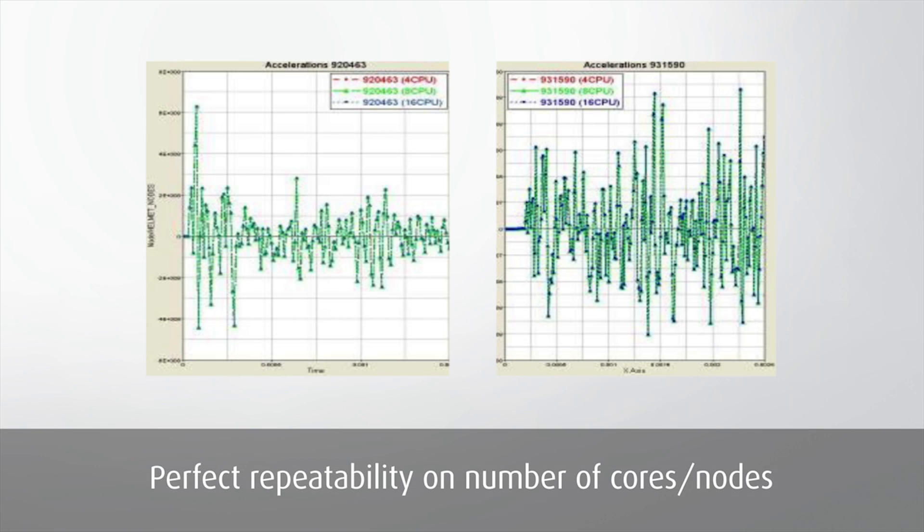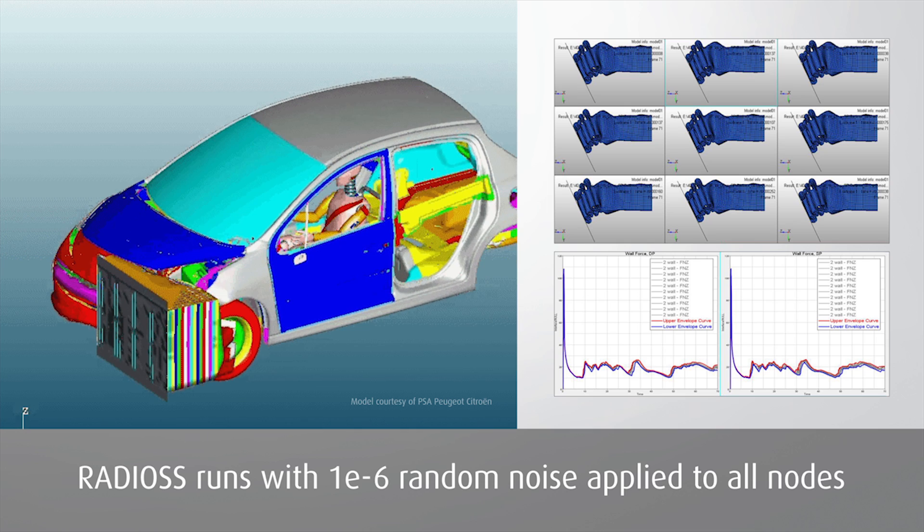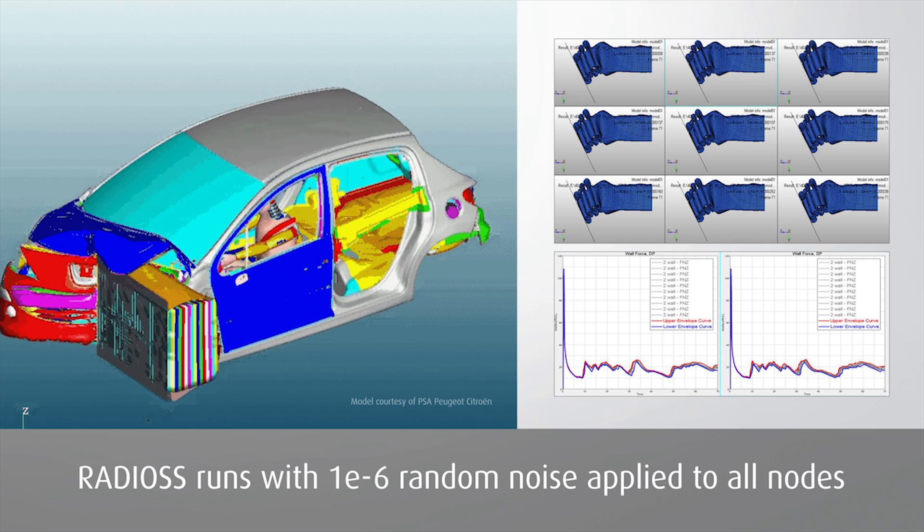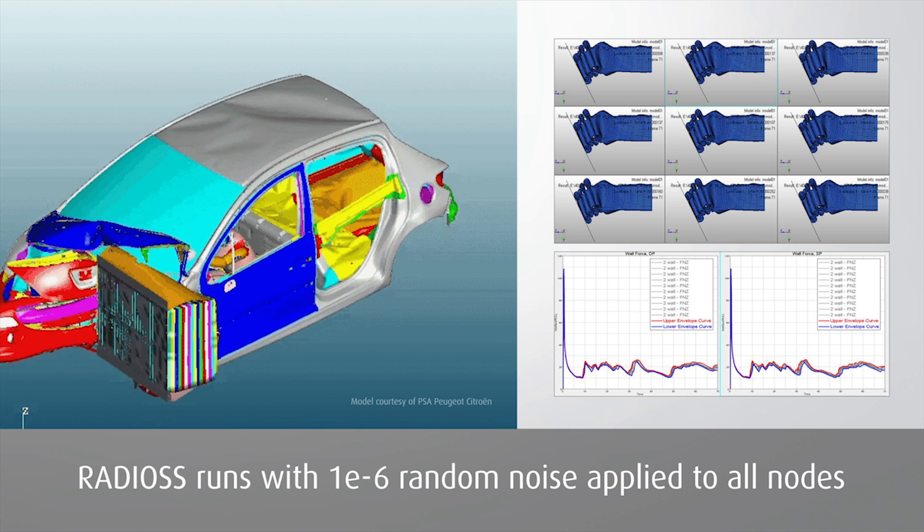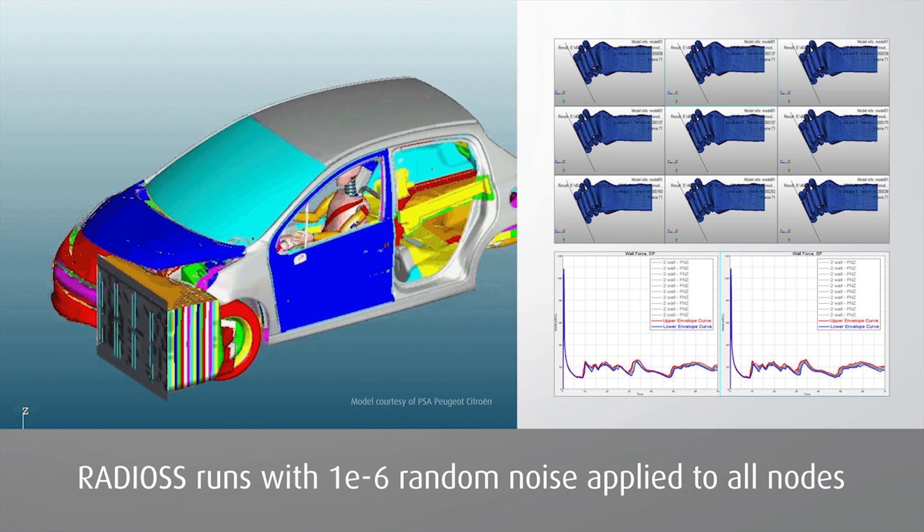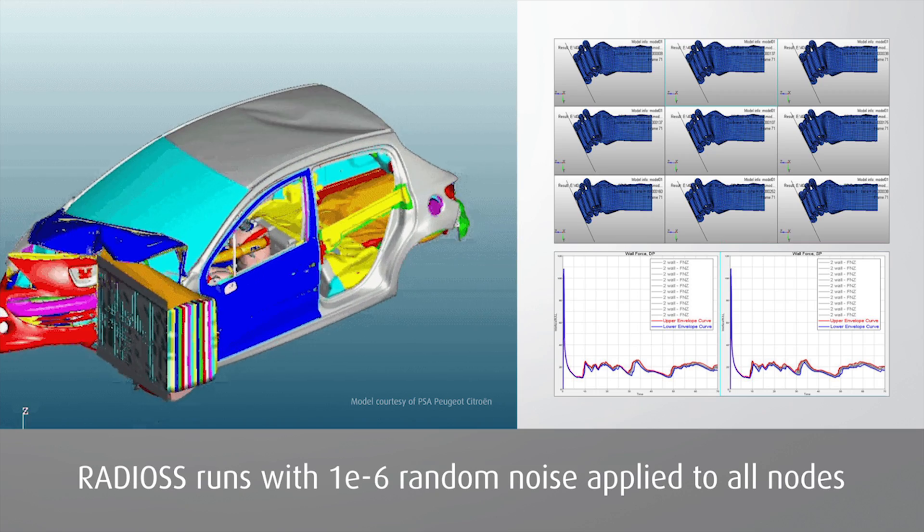The robustness of Radios is especially apparent in numerical vehicle crash simulation, where results are fully repeatable regardless of the number of computer cores, nodes, or threads used in the parallel computation. Numerical scattering of results is minimized.